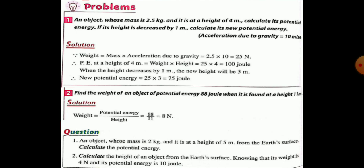Some problems. First, an object's mass is 2.5 kilograms and it's at a height of 4 meters. Calculate its potential energy if its height is reduced by 1 meter, and calculate its new potential energy. Don't forget acceleration due to gravity equals 10 meters per second squared. Solution: weight equals mass times g equals 2.5 times 10 equals 25 Newton. Potential energy at 4 meters equals weight times height equals 25 times 4 equals 100 joules. When height decreases by 1 meter, new height is 3 meters, new potential energy equals 25 times 3 equals 75 joules.